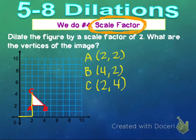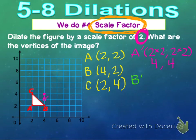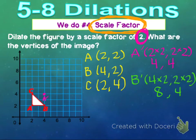Our scale factor is 2, which means we want to multiply each coordinate by 2. For A prime: 2 times 2, comma, 2 times 2 — which is (4, 4). So we go over 4 and up 4 for A prime. For B prime, our original was (4, 2), and multiplying both by 2 gives us 4 times 2 = 8 and 2 times 2 = 4. So B prime is at (8, 4).